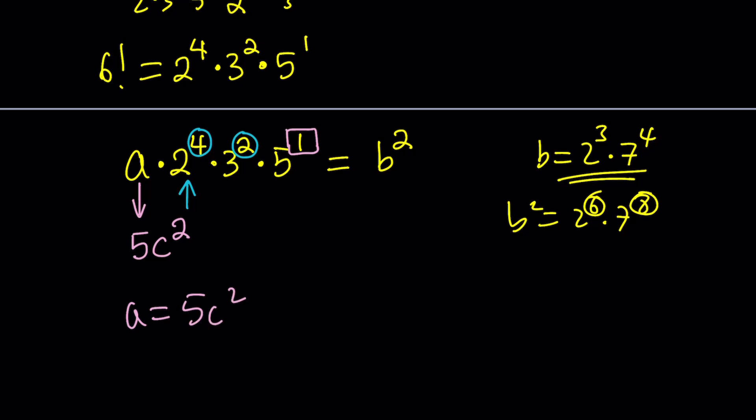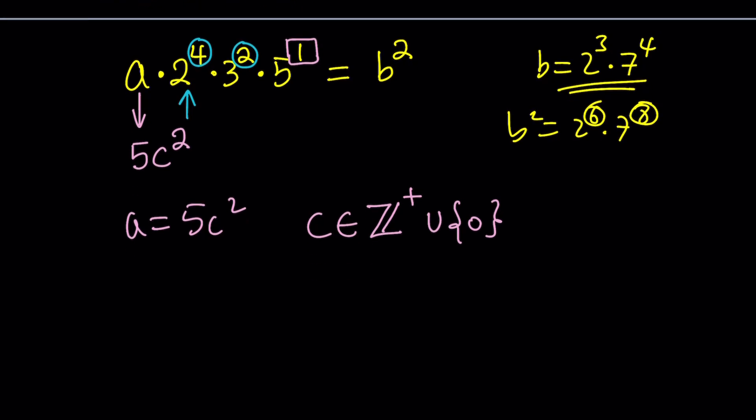So a equals 5C squared is a solution, and C is a positive integer. Can C be 0? And the answer is no, because in that case a will be 0 and b will be 0. Well, it sort of works, but if you're looking for positive integers, that will be the case. So I'm going to put positive, maybe union 0, which means 0 is also included, but we're not going to care about 0 because that's not that important in this context at least.